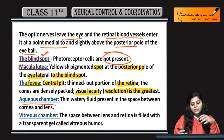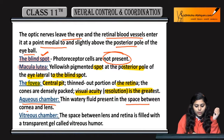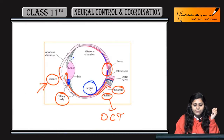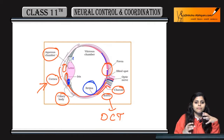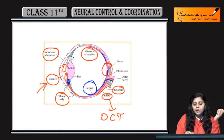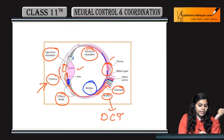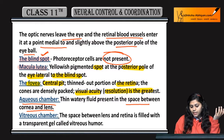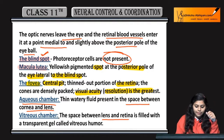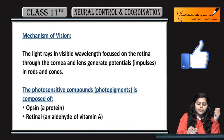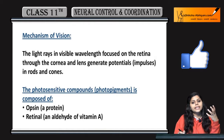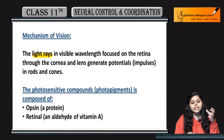The aqueous chamber contains thin watery fluid present in the space between the cornea and lens. The vitreous chamber is present between the lens and retina; the space between lens and retina is filled with a transparent gel called vitreous humor.